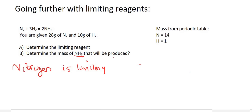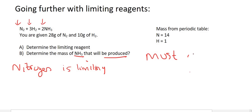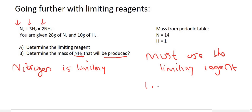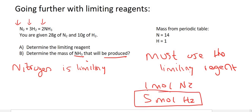The question says: determine the mass of NH₃ that will be produced. We use the mole ratios, but we must use the limiting reagent. If we used five moles of hydrogen, that wouldn't be correct because we're not going to use all of it — there's too much. We are going to use all of the nitrogen because it's the limiting one, so we use one mole.